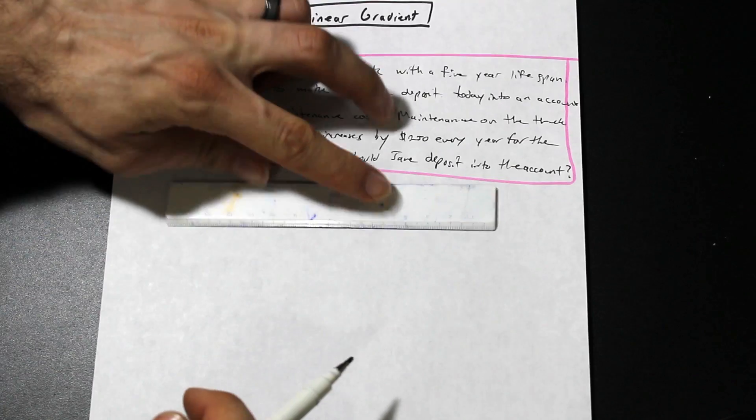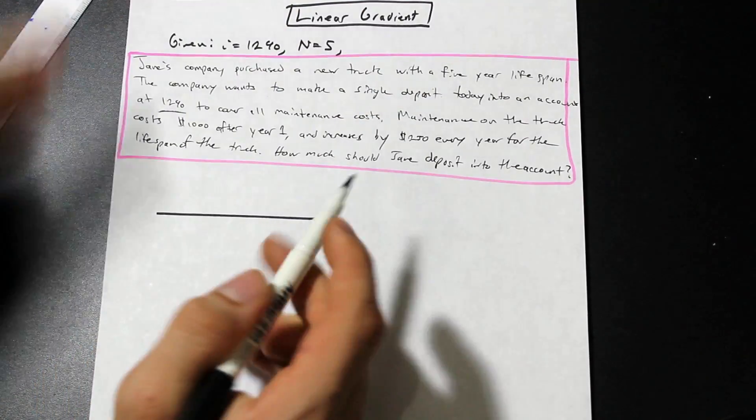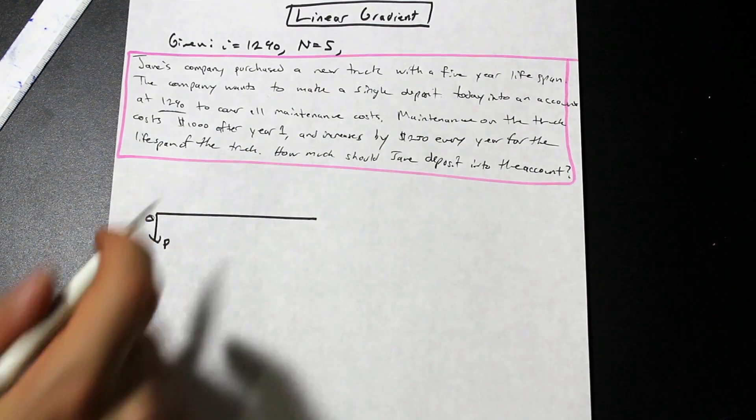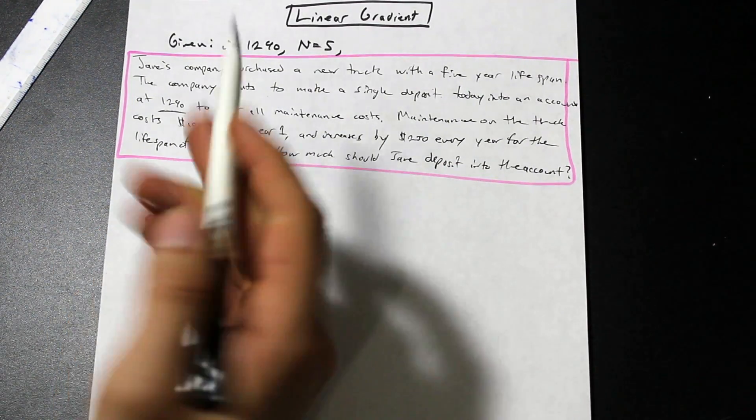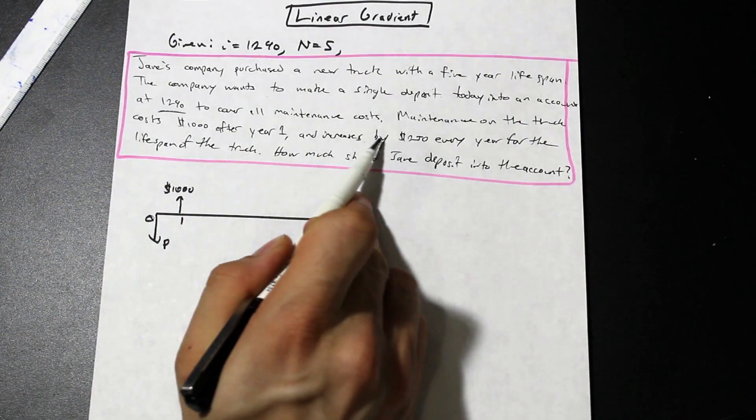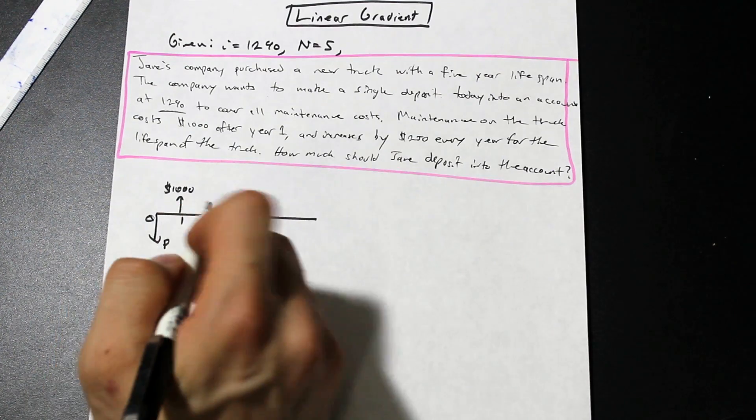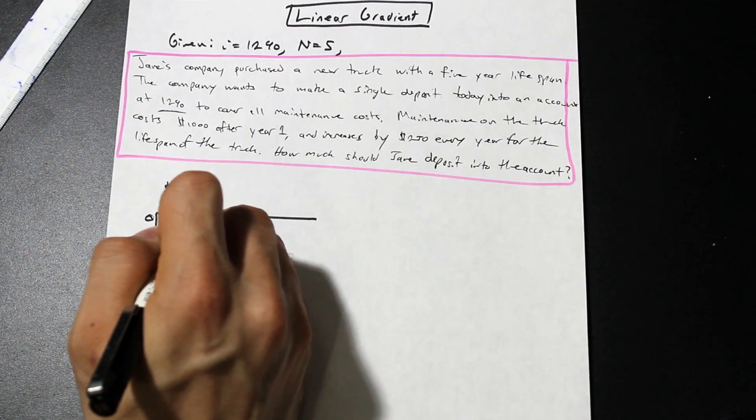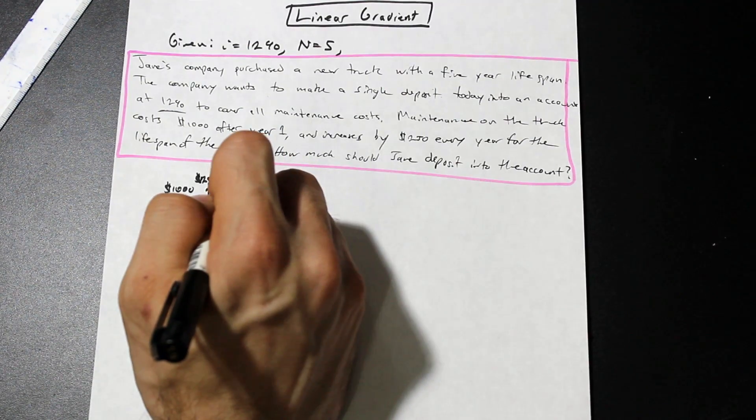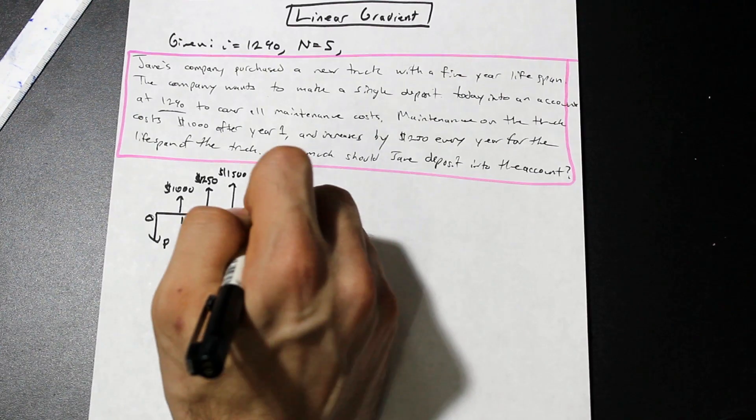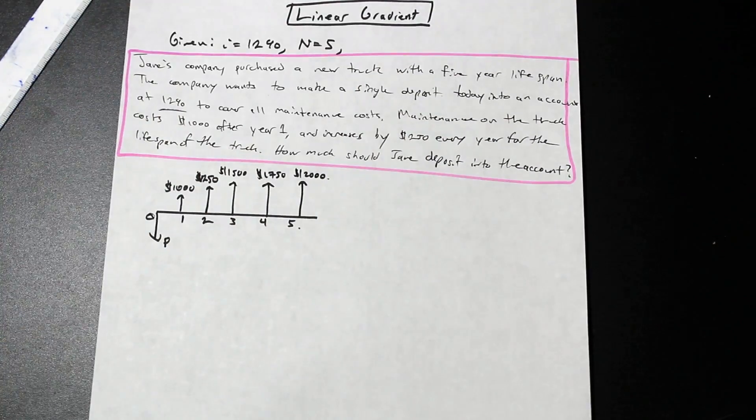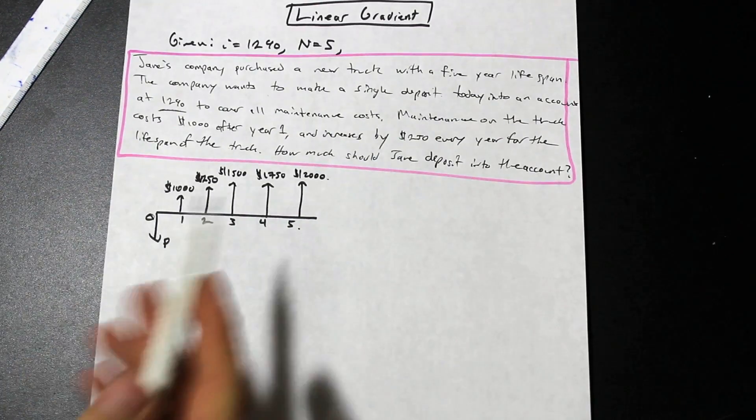Let's go ahead and get started with the cash flow diagram. Jane's company wants to make a payment right now, we'll call that P in year zero, to cover five years of maintenance costs. So it says in the first year here, the costs after the first year, so at the end of first year, are $1,000. So we're going to write it like this, that's year one, and it says that after year one, they increase by $250 for the lifespan of the truck. So that means that in year two, it's going to increase to $1,250. Year three is going to be $1,500. Year four is going to be $1,750. And year five is finally going to be $2,000. So that's what we've done, is we've taken the question, the worded question, and we've transferred it into a series of payments on a cash flow diagram.